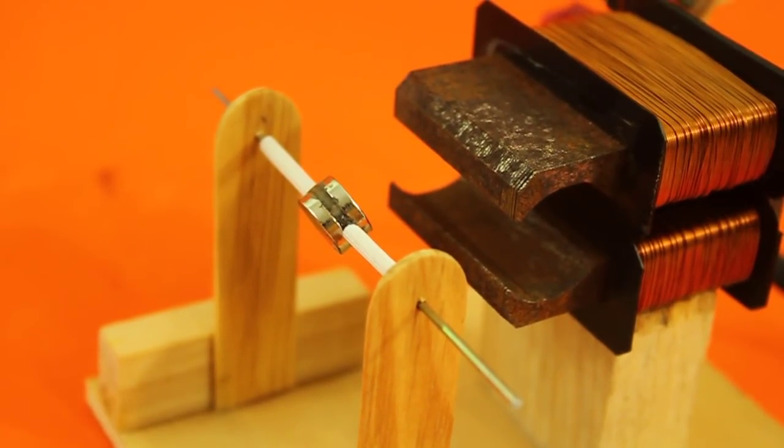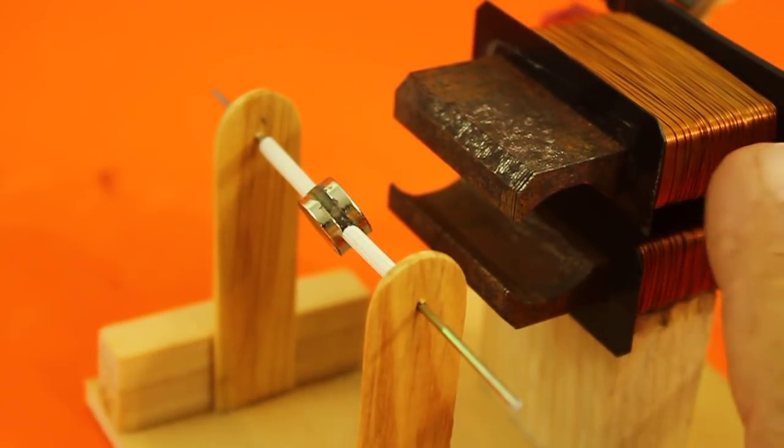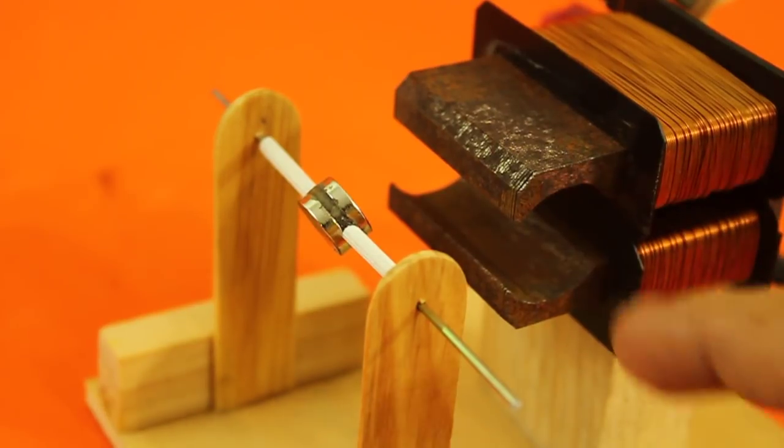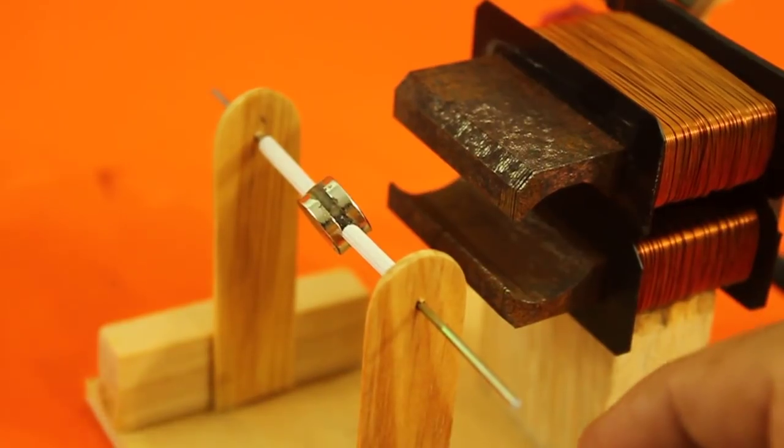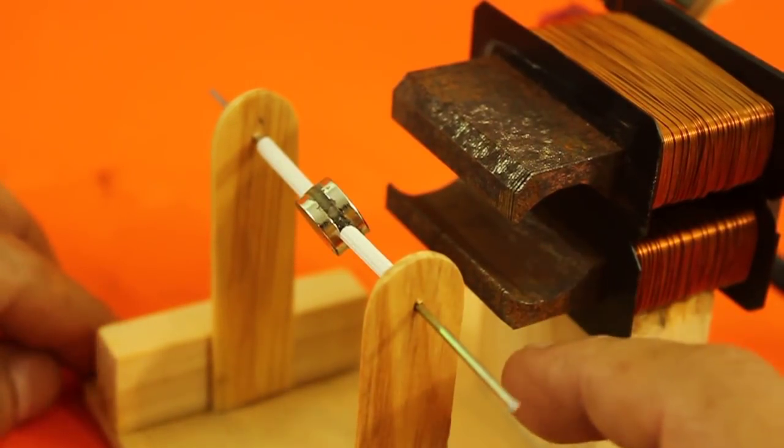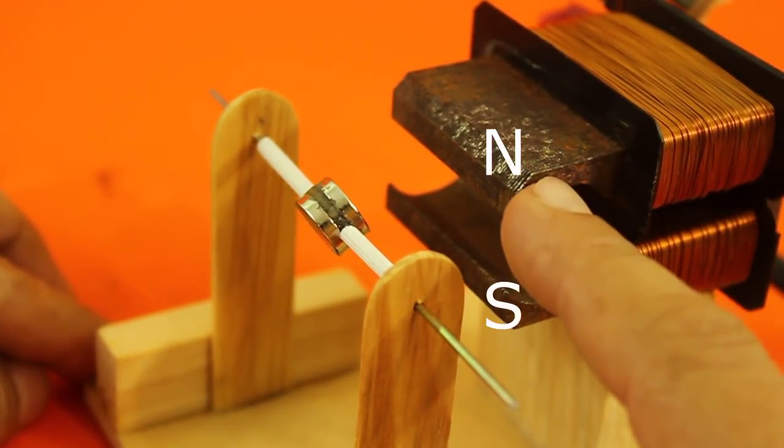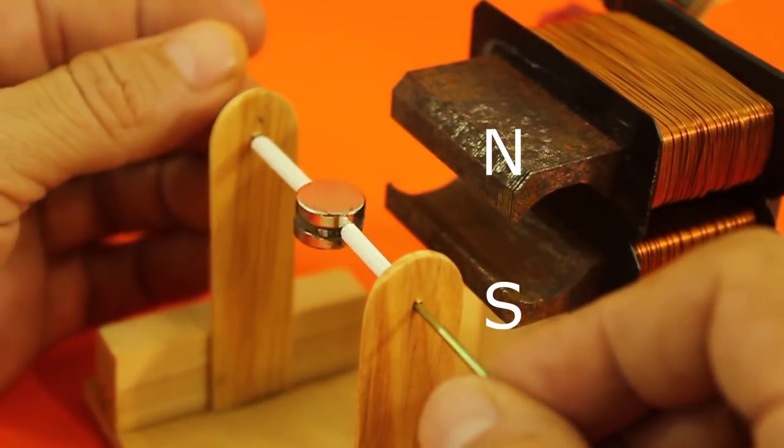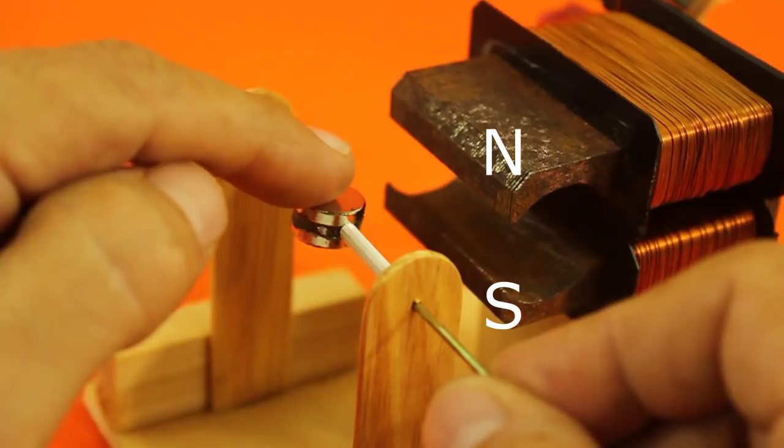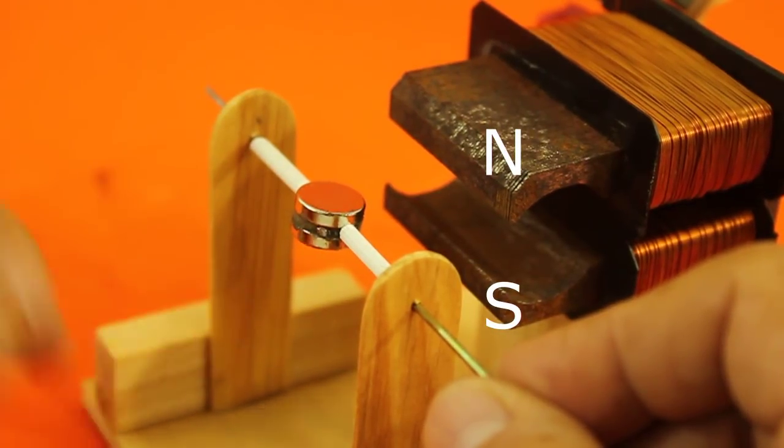Let me explain how the motor works. Here we have alternating current. So here we have alternating magnetic poles. Imagine that we are now in a part of the cycle where this is north and this is south. Then the magnet will align to have its south pole here and the north here.